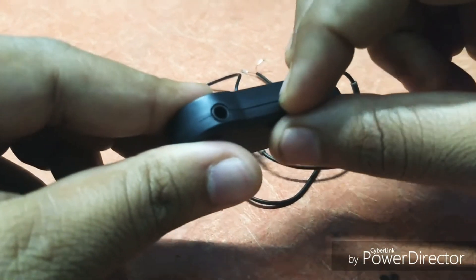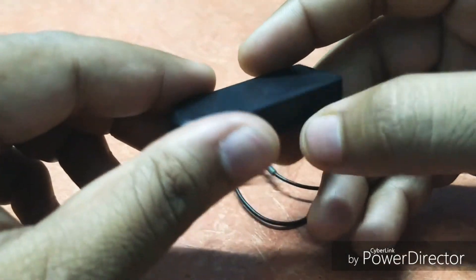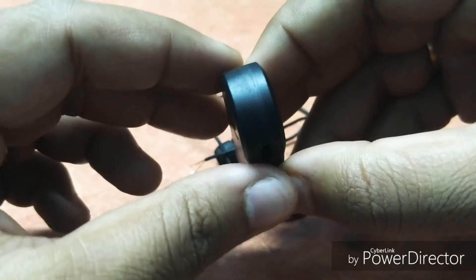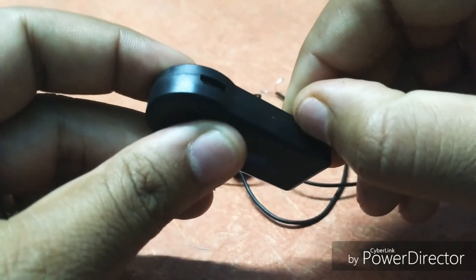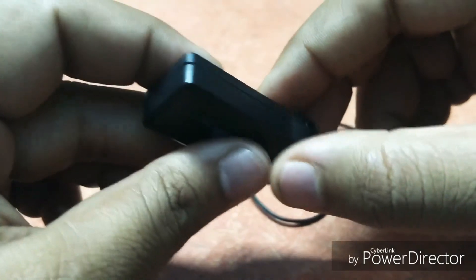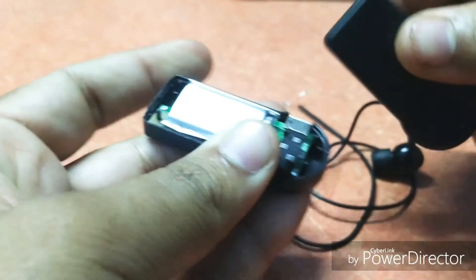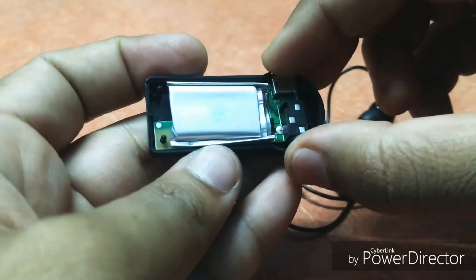You need to open this from this section. It's pretty easy, no screws, nothing is mounted. Just put a little bit of pressure from this point. You can use a knife to remove this. Now we have the circuit inside.